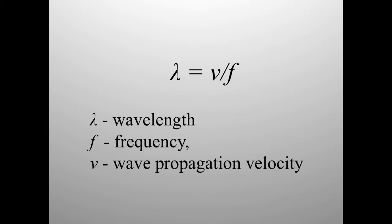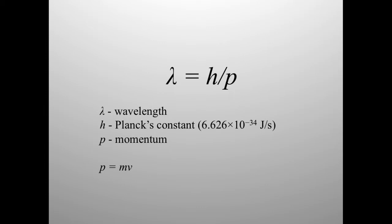A particle's wavelength is inversely proportional to its momentum. This relation is stated in the de Broglie equation: lambda equals h divided by p, in which lambda is wavelength, h is Planck's constant (6.626 × 10⁻³⁴ joules per second), and p is momentum — a product of mass and velocity, p = mv. Because wavelength is inversely proportional to momentum, the wavelength for macroscopic objects is negligibly short. But for subatomic particles, their wavelengths are comparable to the scale of the atom itself, making their wave nature very significant to their behavior.